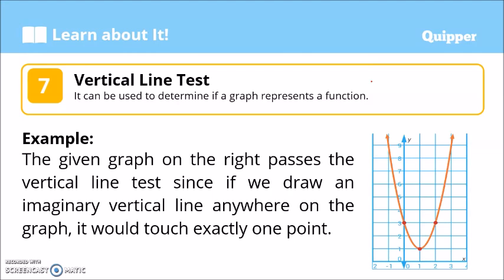So we also have the vertical line test. This is another way of determining whether a given graph represents a function. Example: this graph right here passes the vertical line test, since if we draw an imaginary vertical line anywhere on the graph, it would touch exactly one point.